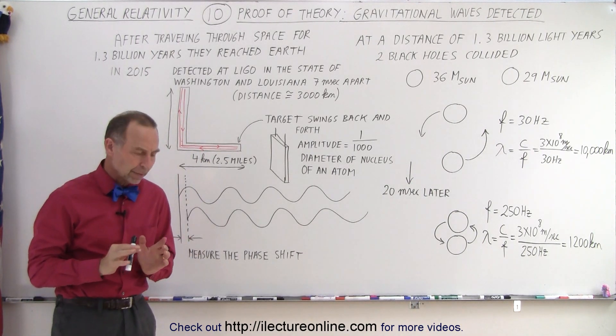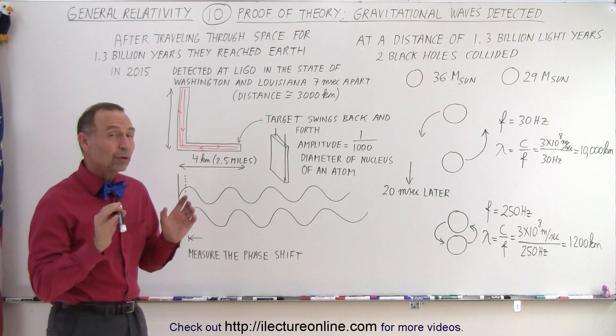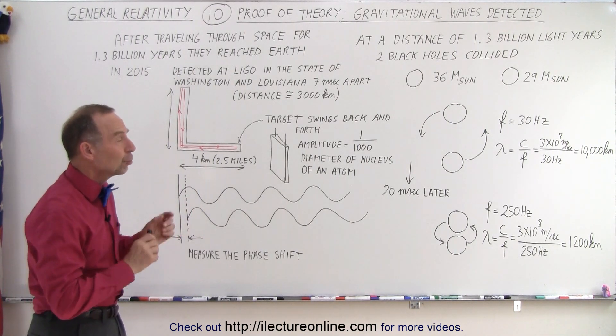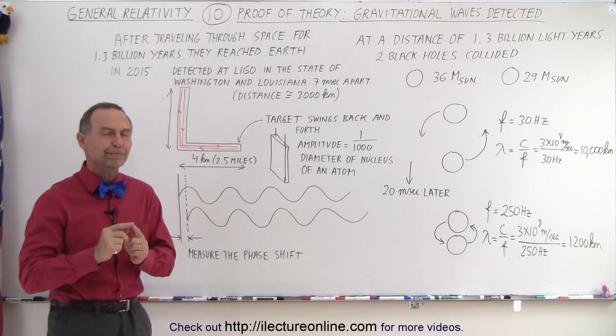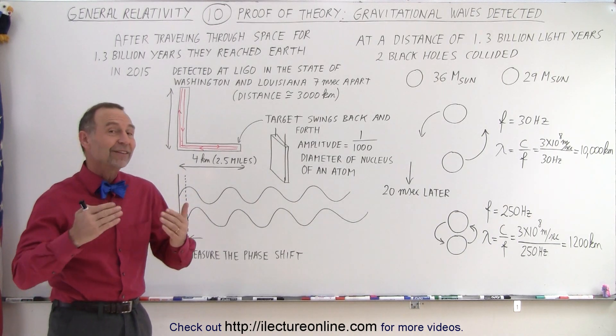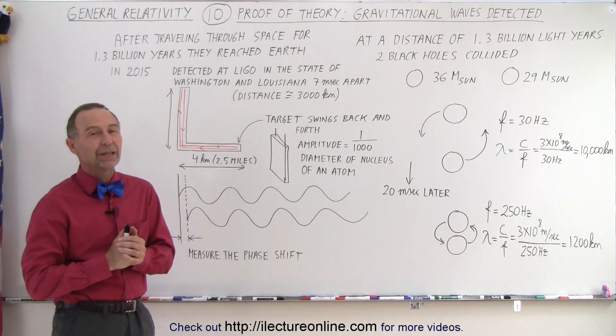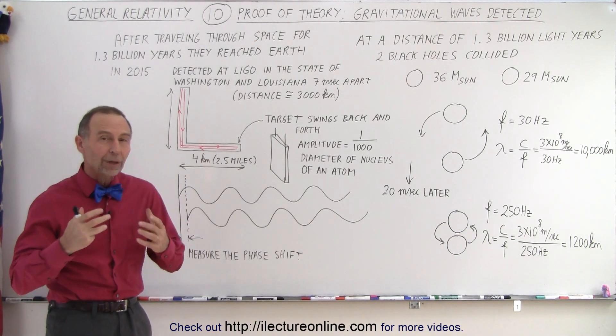What did they detect? It turns out that at a location about 1.3 billion light years away from here, two black holes collided. How do we know that? We felt the aftermath of that 1.3 billion years later, and we've been able to figure out what must have happened.